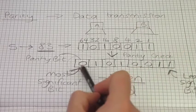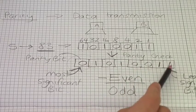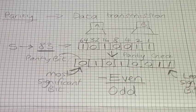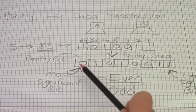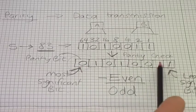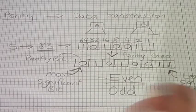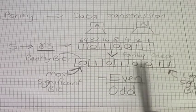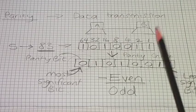Computer B receives this byte of data: zero, one, zero, one, zero, zero, one, one. Now it wants to check if what it received is what was sent. It counts the number of ones: one, two, three, four. Computer B knows we're using even parity, so it counts and finds an even number of ones — four bits in total. That is an even number, so it must have been received correctly.